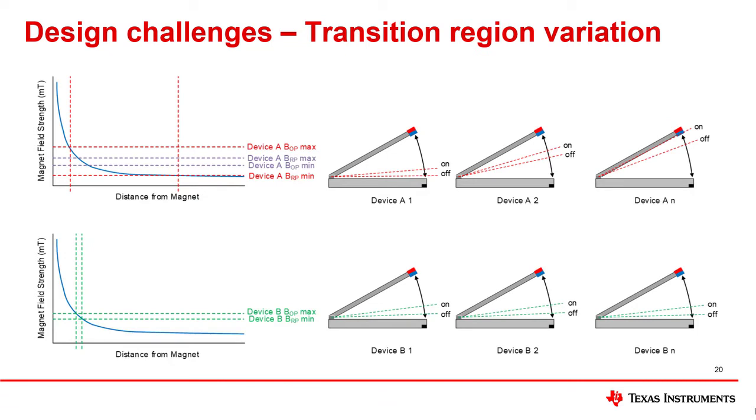One other nuance to be aware of that might be directly related to Hall switch specifications is transition region variation. How much tolerance there is on BOP and BRP will influence how much variation you could expect between transition regions amongst identically designed equipment. Smaller tolerances on BOP and BRP will lead to the greatest repeatability from the sensor.